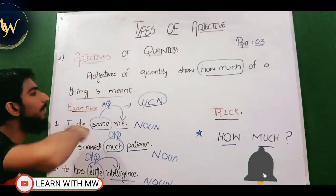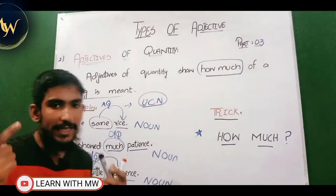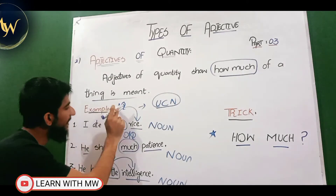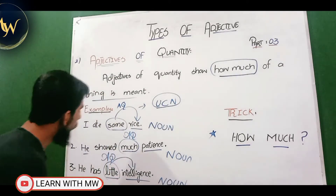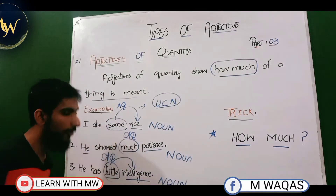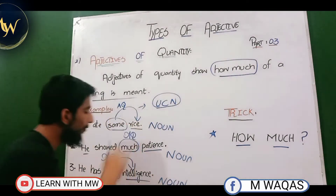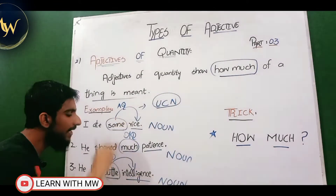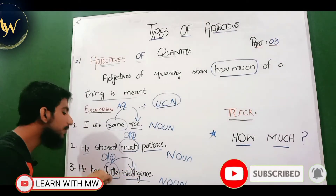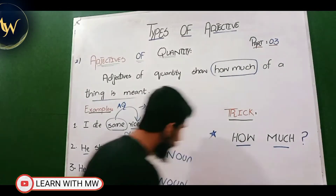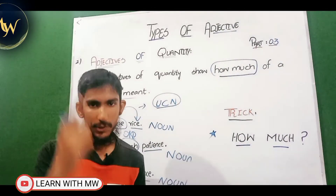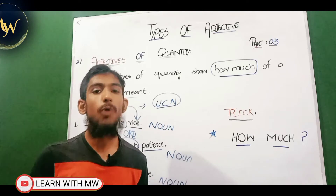So to summarize: adjective of quantity basically shows how much of a thing is meant and answers the question 'how much.' In our examples — 'I ate some rice,' some is adjective of quantity; 'He showed much patience,' much is adjective of quantity because it adds meaning to the noun patience; and 'He has little intelligence,' little is adjective of quantity. We have now learned both adjective of quality and adjective of quantity.